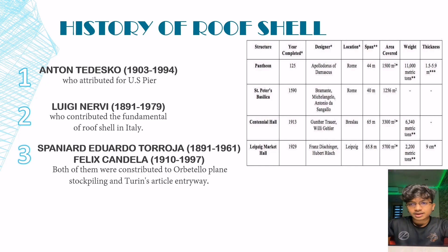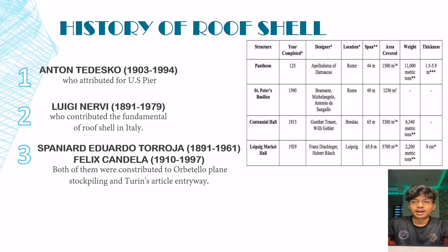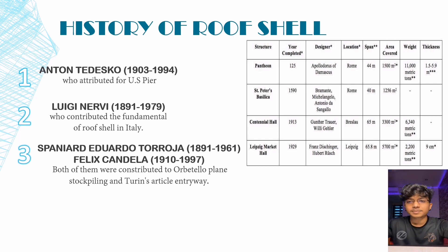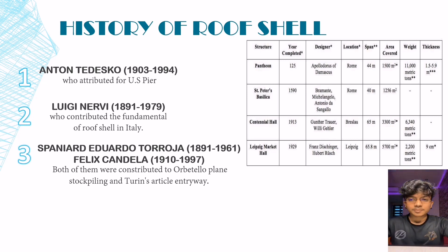The monolithic dome can also be related to this roof shell structure, as it is a massive and majestic structure in Italy. I've attached a table of four structures around the world that are still standing today. The first is the Pantheon, second is St. Peter's Basilica — both located in Rome, as Rome is usually connected to these roof shell structures. Third is Centennial Hall in Breslau, and fourth is Leipzig Market Hall in Germany. These are all the structures related to roof shell.